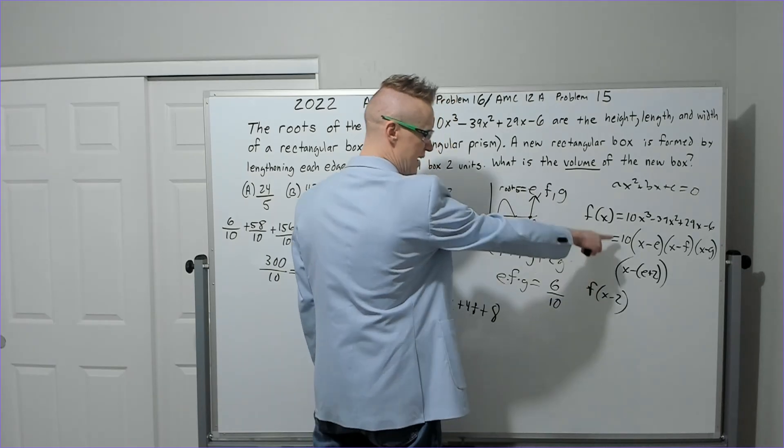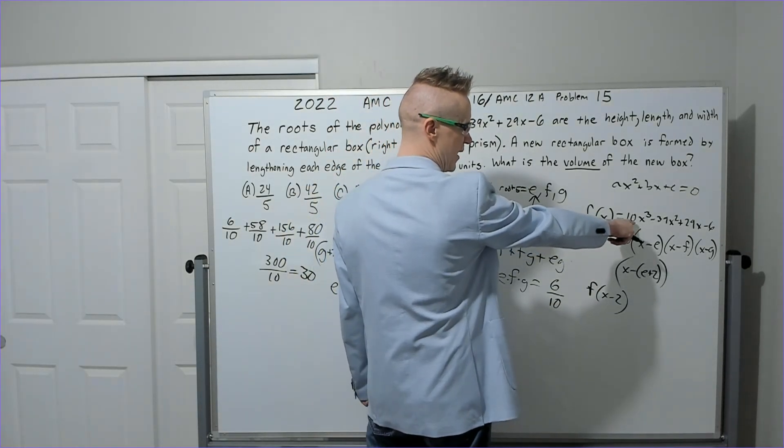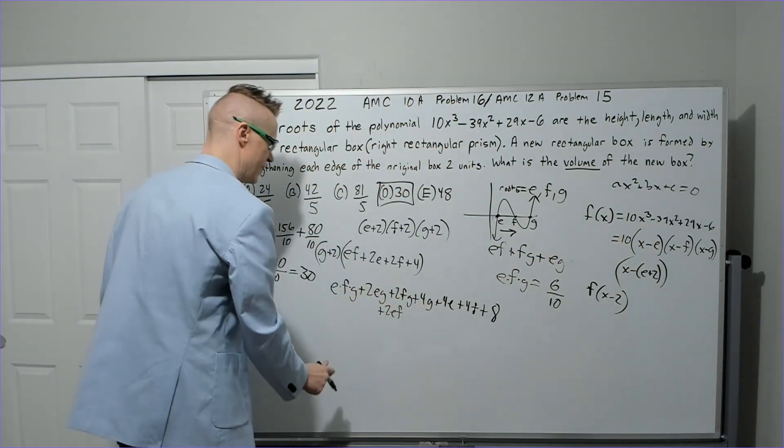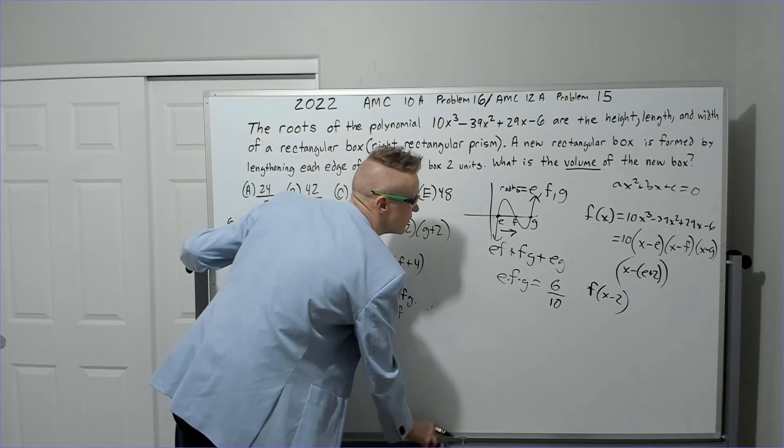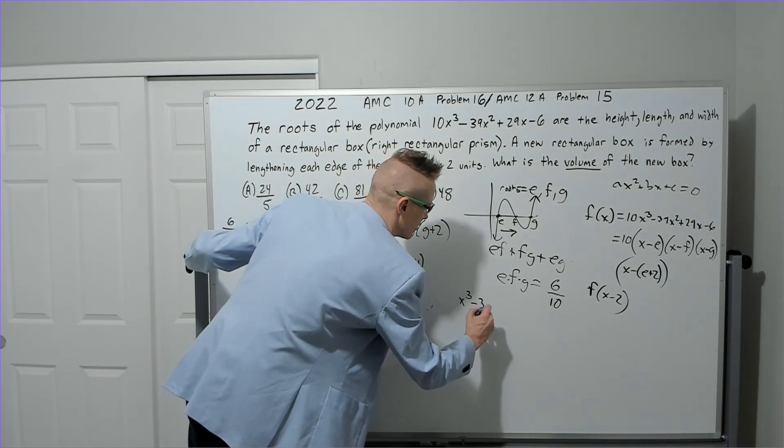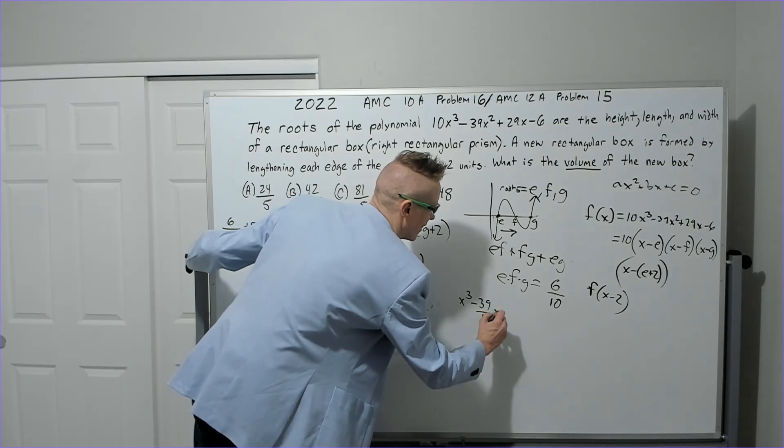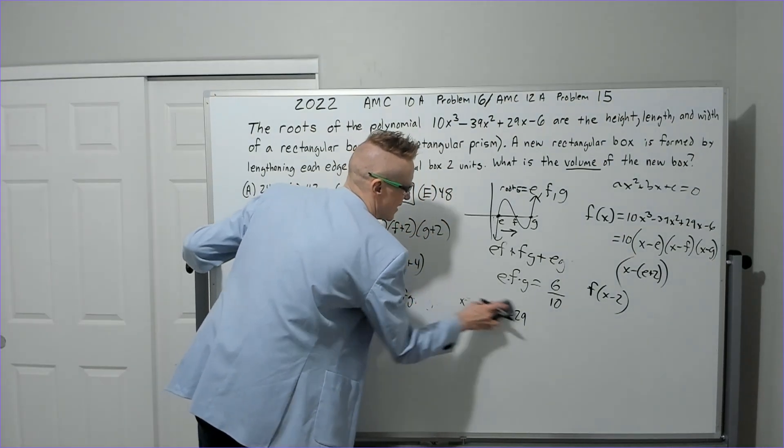So if you plug this x - 2 in, one way you could do that, by the way, is just dividing by 10. Let's get some space here and show what that would look like. If you divide by 10 you would get x³ - 39/10 x² + 29... I don't know, maybe it's better to leave it as is.